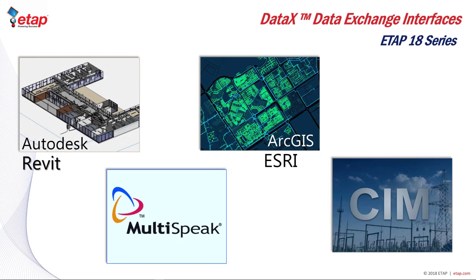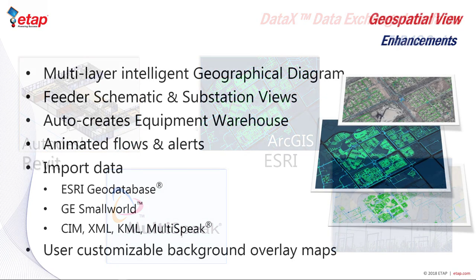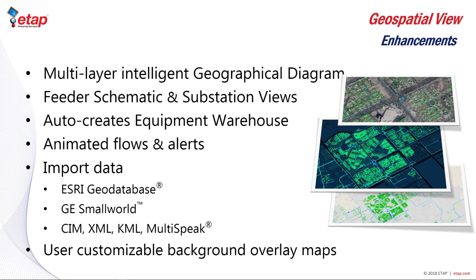Some of the other data exchange interfaces added to ETAP 18 include Autodesk Revit. We also added an interface for our GIS system, including multi-speak, SIM, and enhancements to our existing ArcGIS interface. Our geospatial diagram provides an editable environment for electrical assets and connectivity combined with geospatial data. This information can be imported from third-party systems and modeled directly into ETAP.